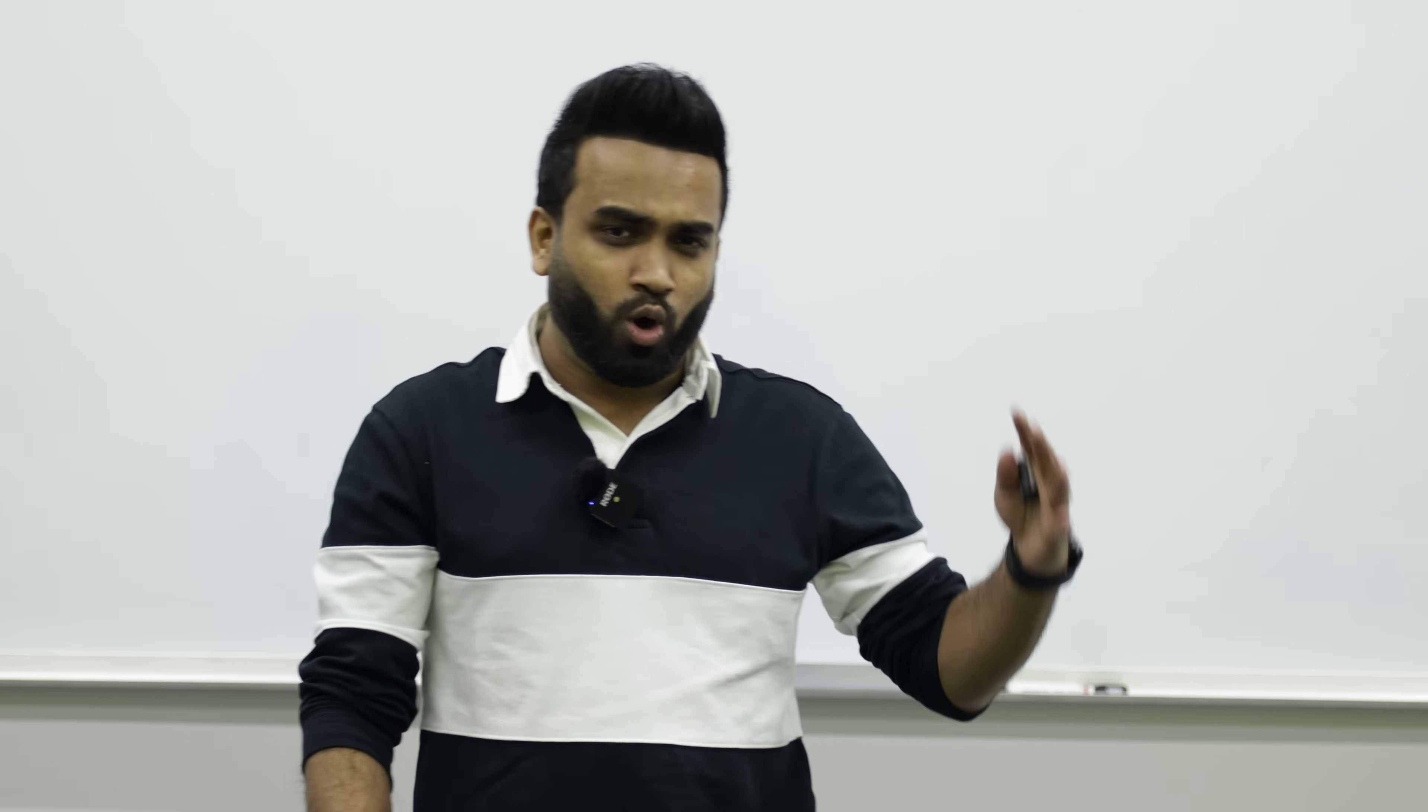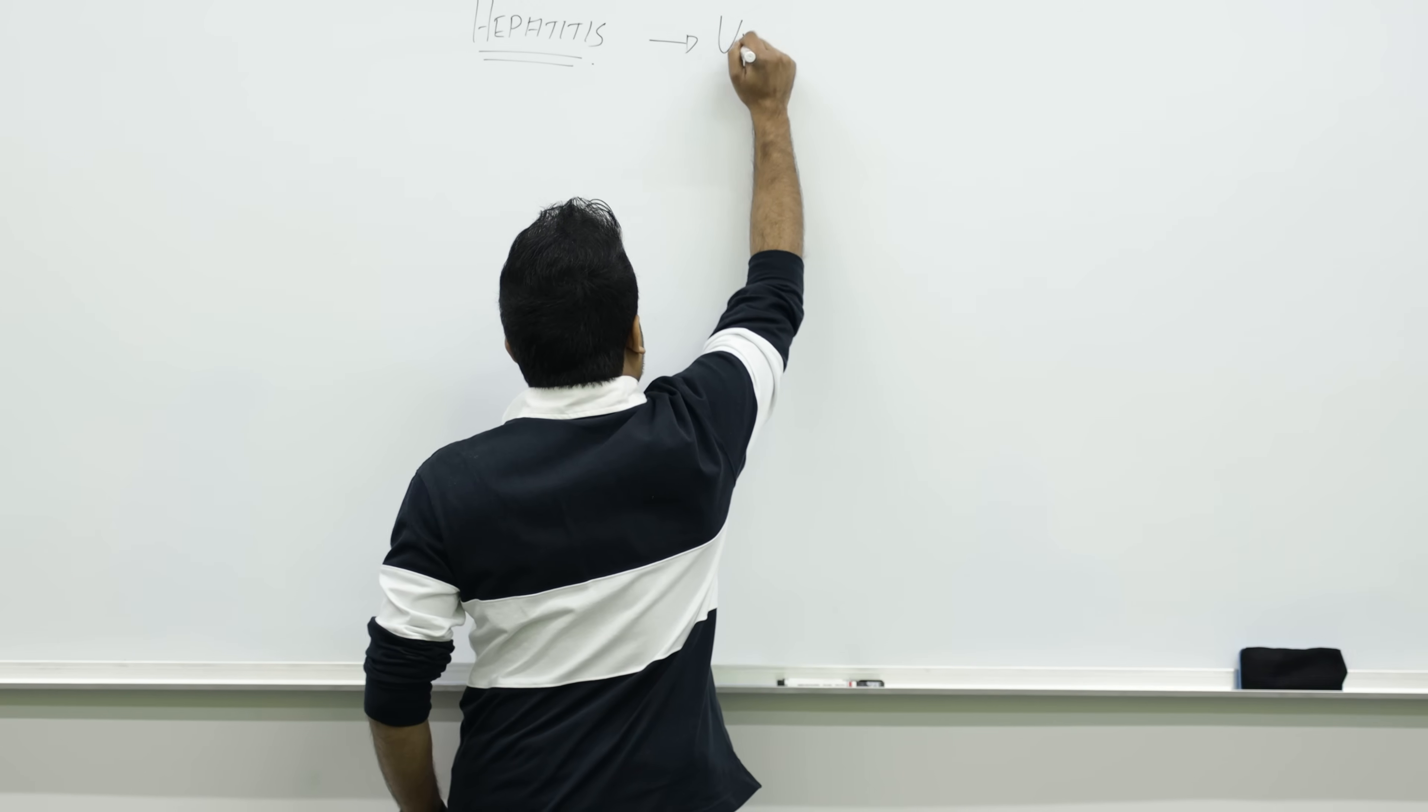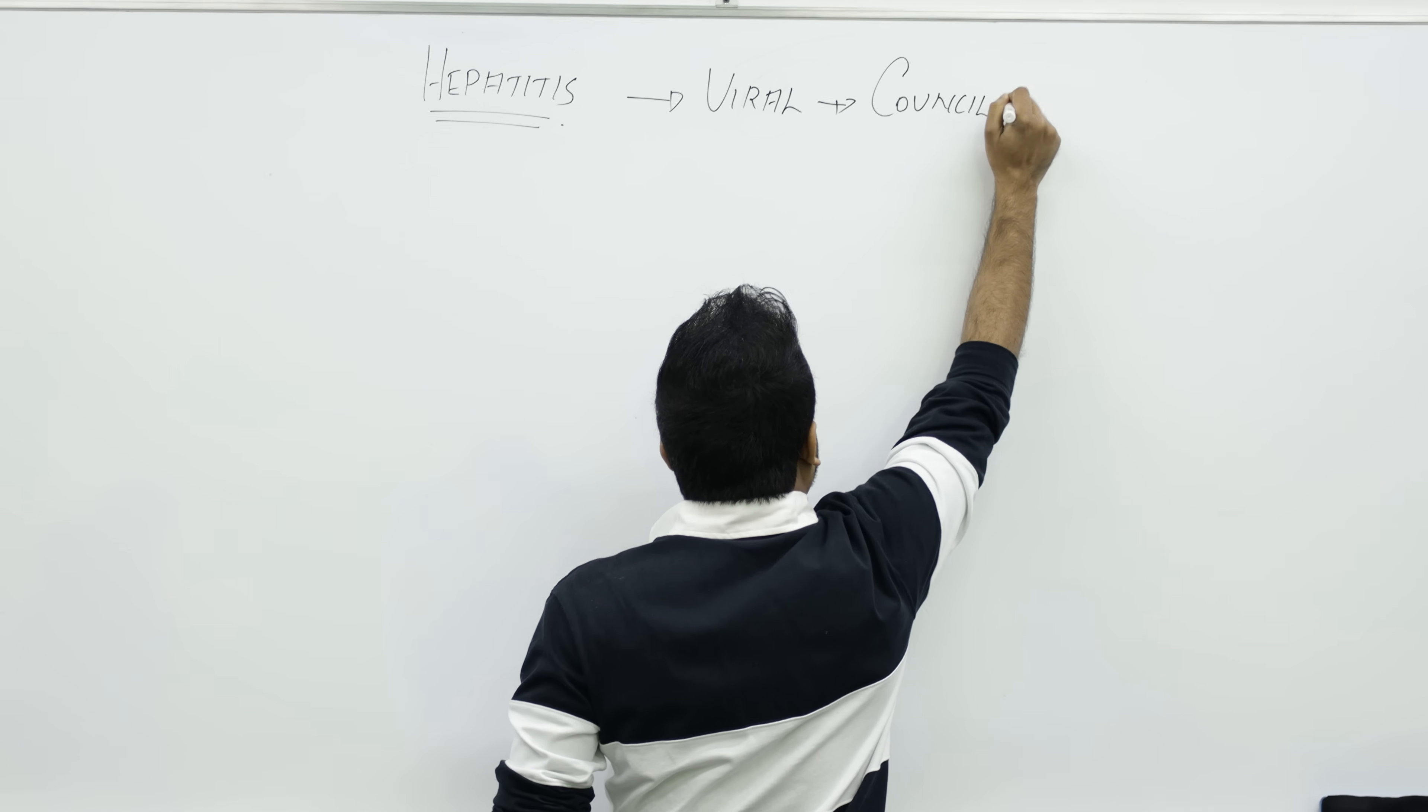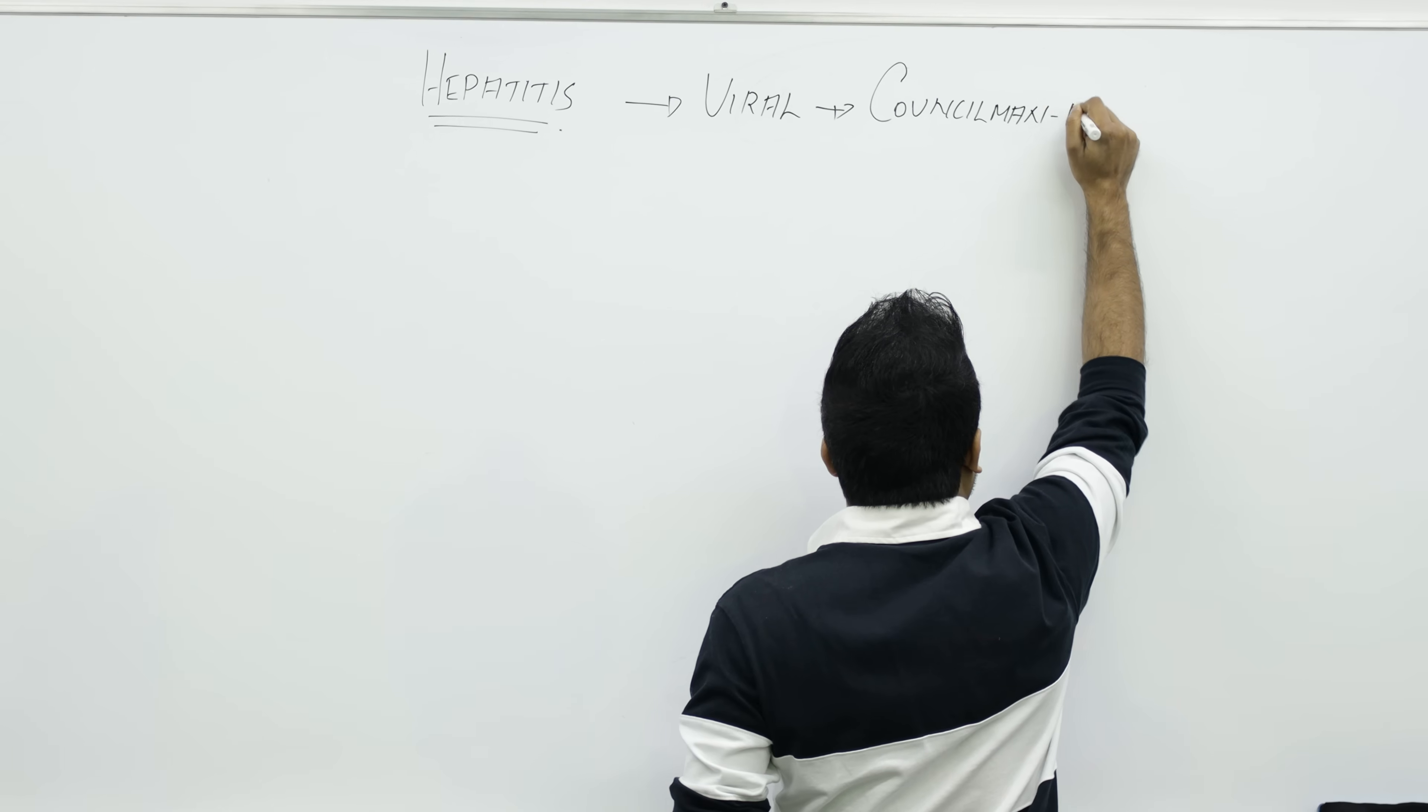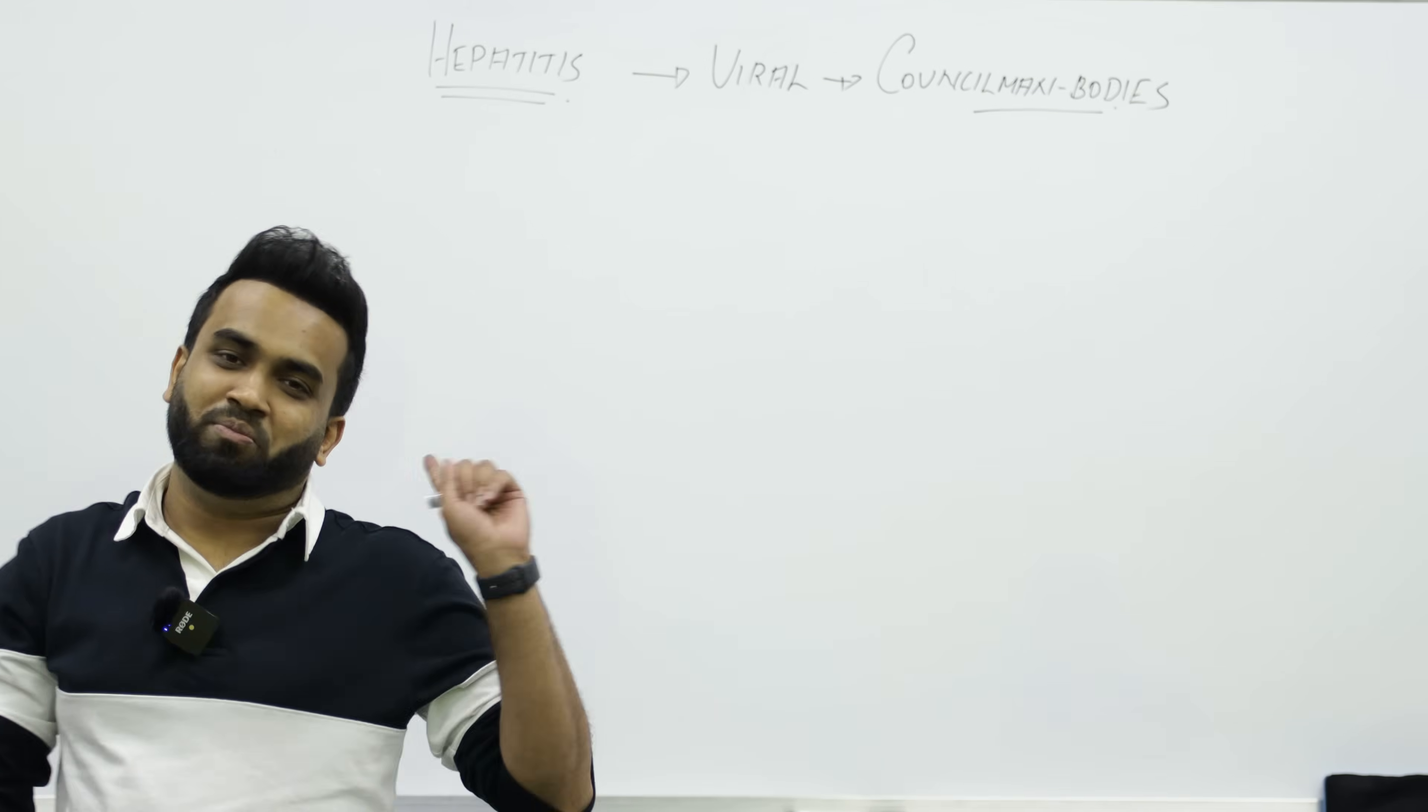In pathology or pathomorphology, they will ask what is a marker to diagnose acute viral hepatitis. That is called Councilman bodies. Always remember for viral hepatitis, the marker we see in the blood is Councilman bodies. Whenever you see this word, no doubt we're talking about viral hepatitis.